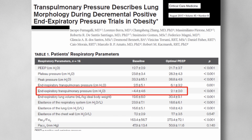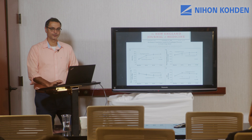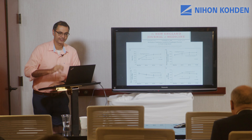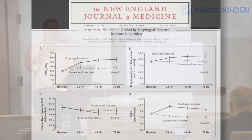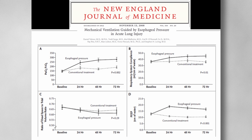As a review: transpulmonary pressure is what we need to inflate the lung. There are two ways this happens. In a spontaneously breathing patient, they generate a negative pleural pressure, which creates a positive transpulmonary pressure. In a paralyzed patient on a ventilator, we provide positive pressure, a small amount of which gets transmitted to the pleural space based on the lung-to-respiratory-system elastance ratio, again yielding a positive transpulmonary pressure.